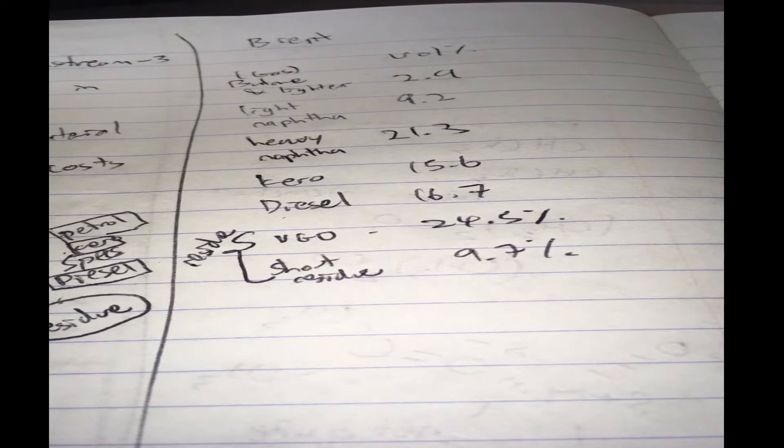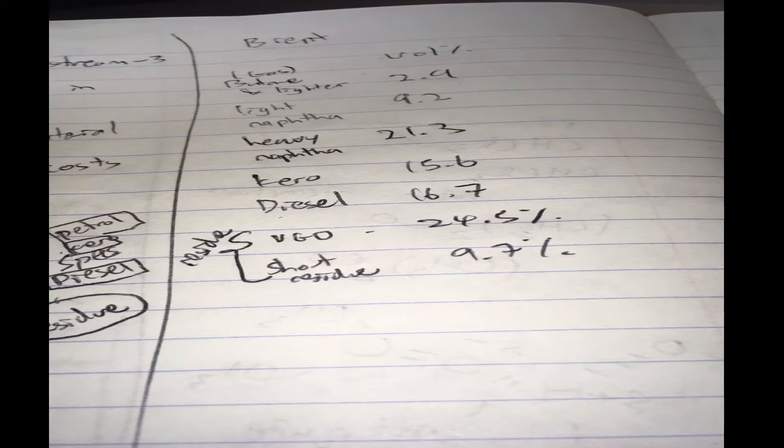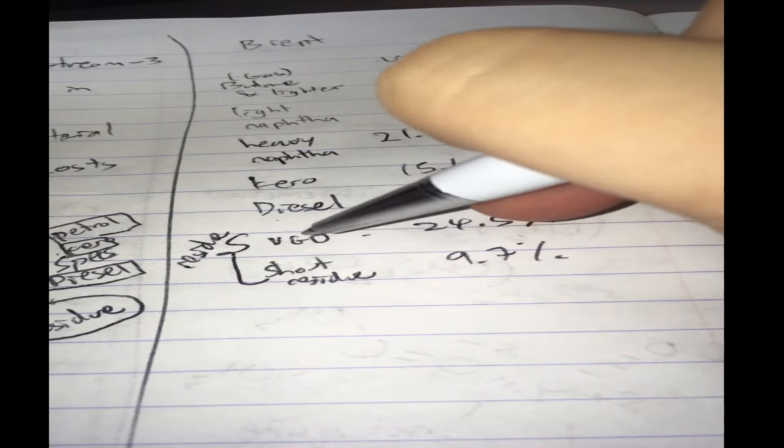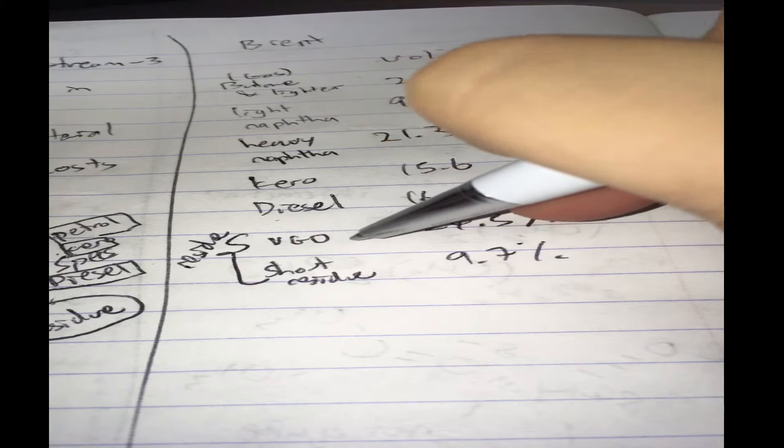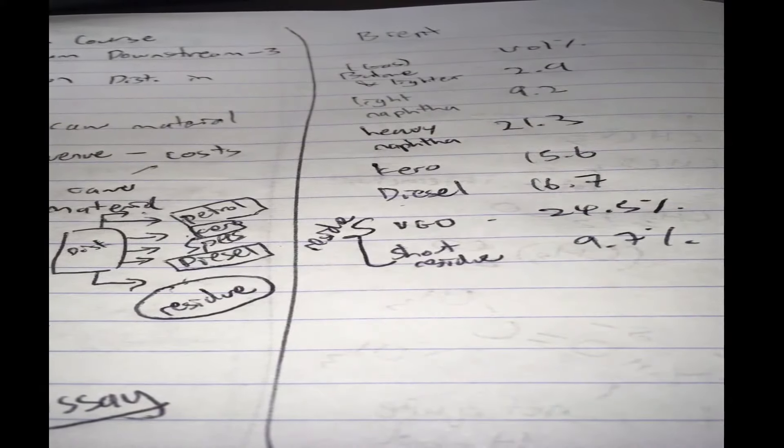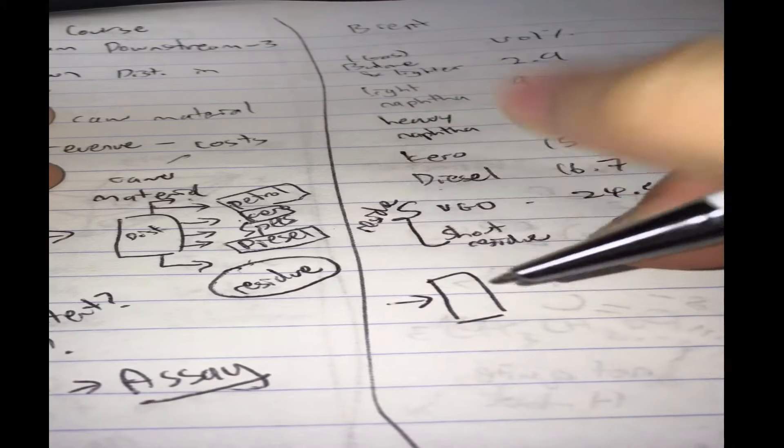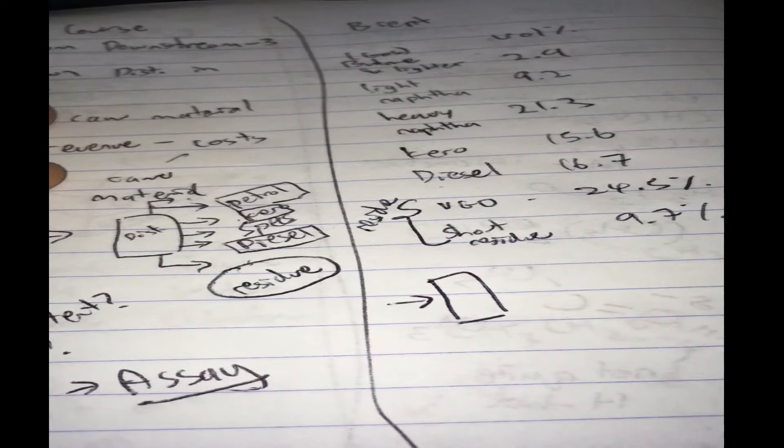So this is typically what a good crude oil would look like. And if you are wondering what short residue is, what vacuum gas oil is, I can explain in further videos. But just for now, all right.